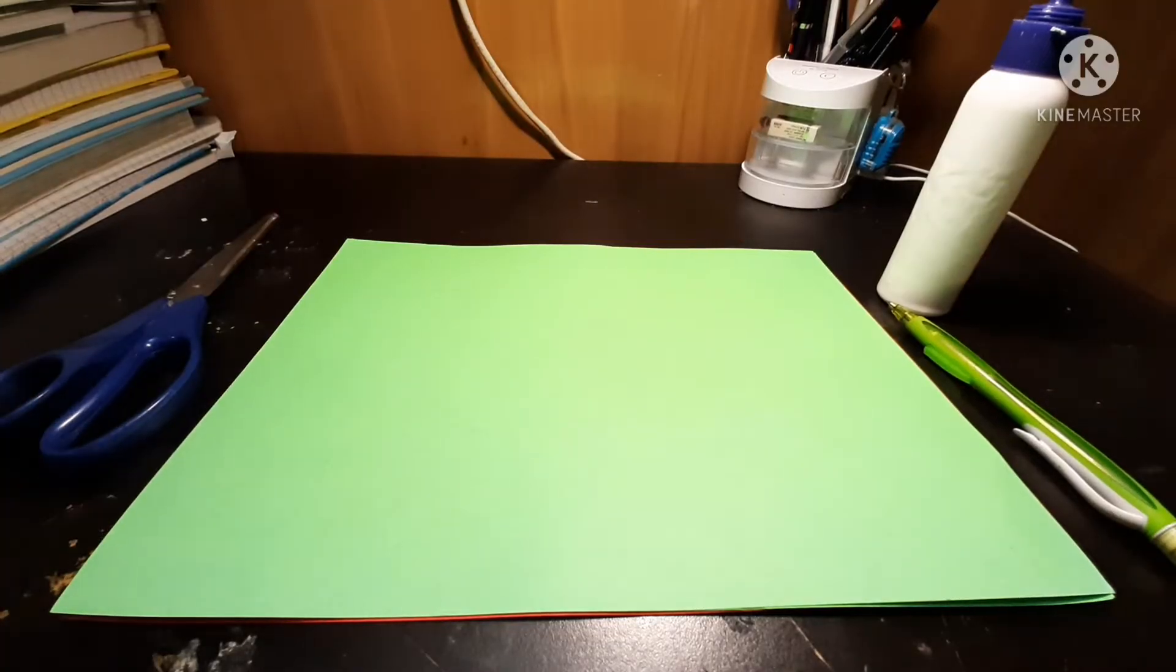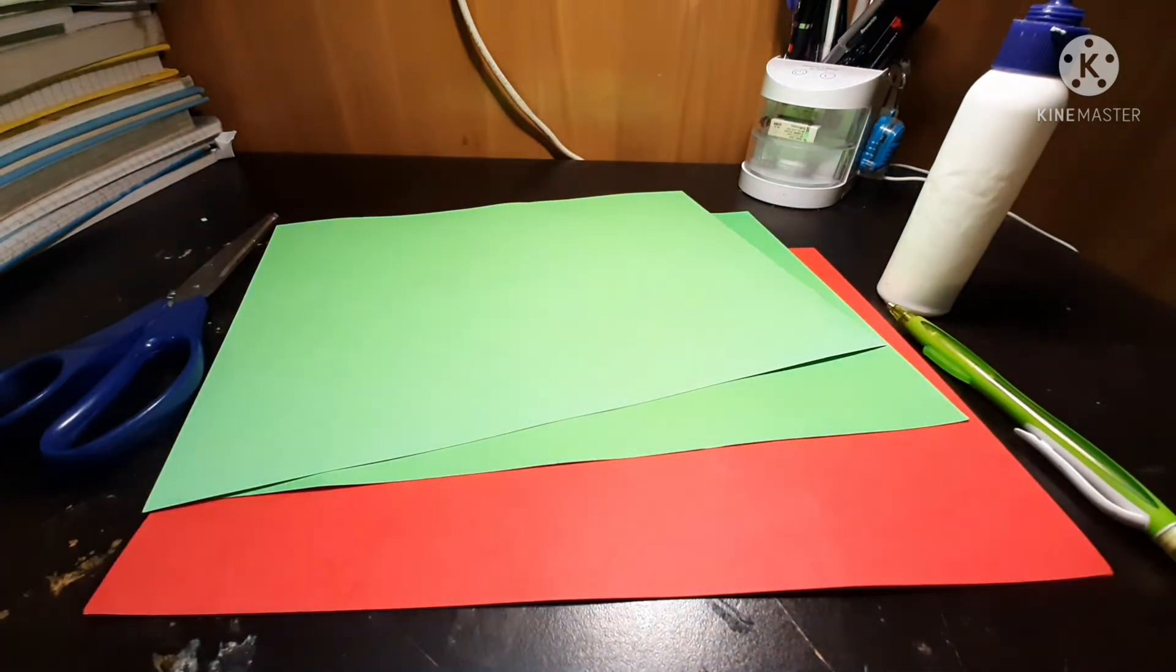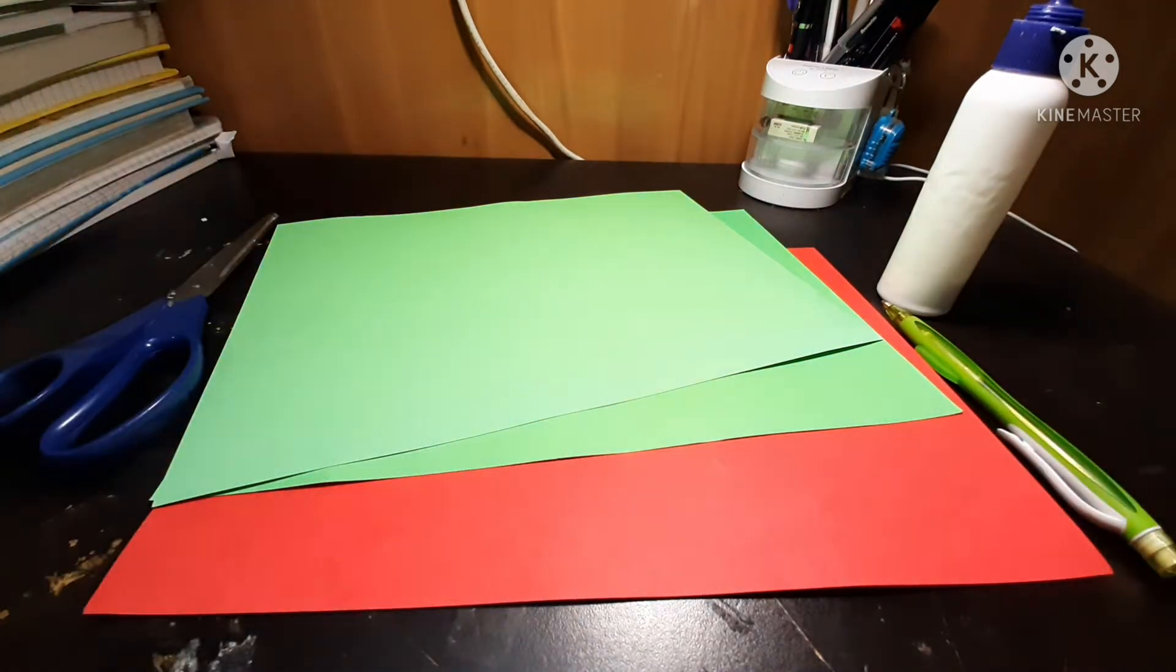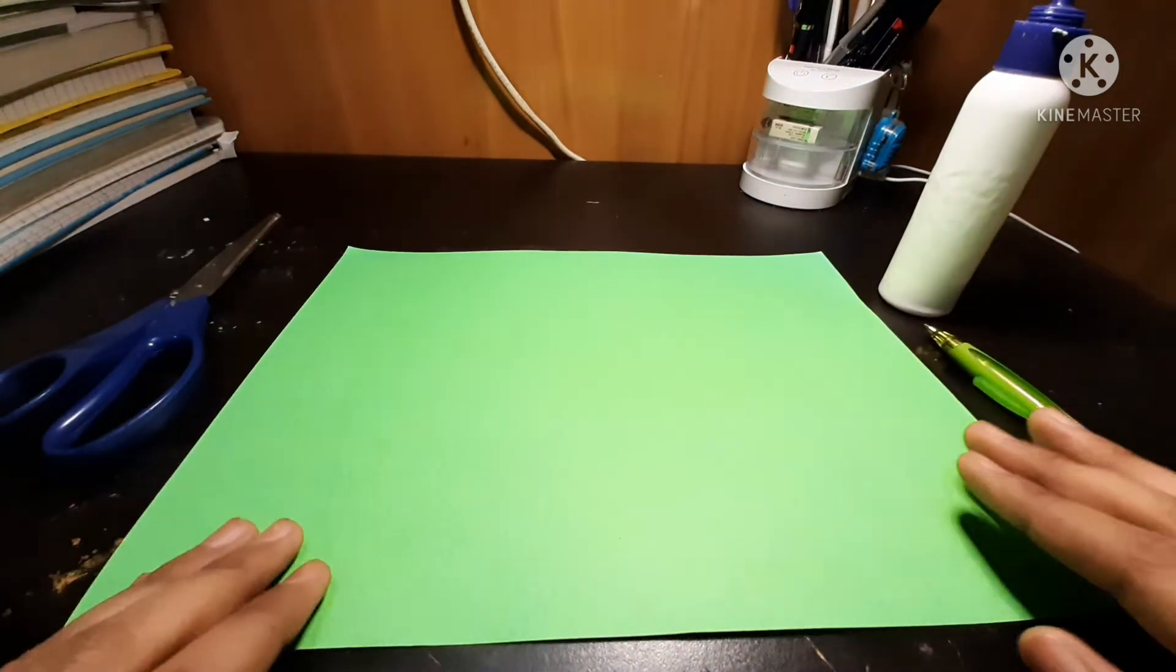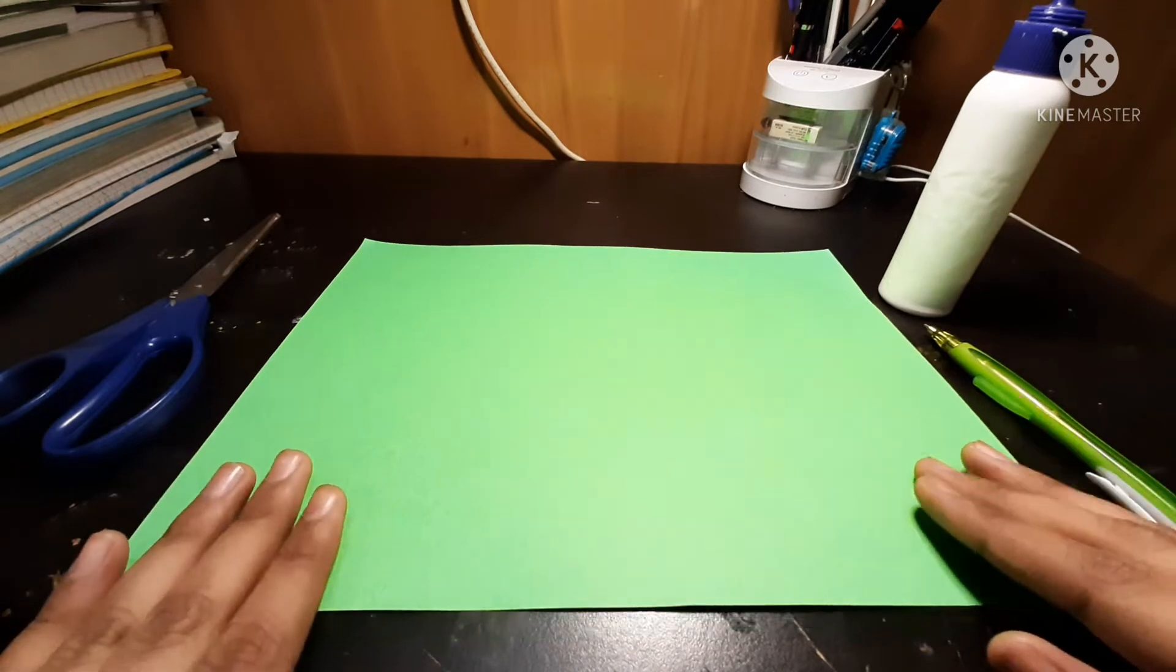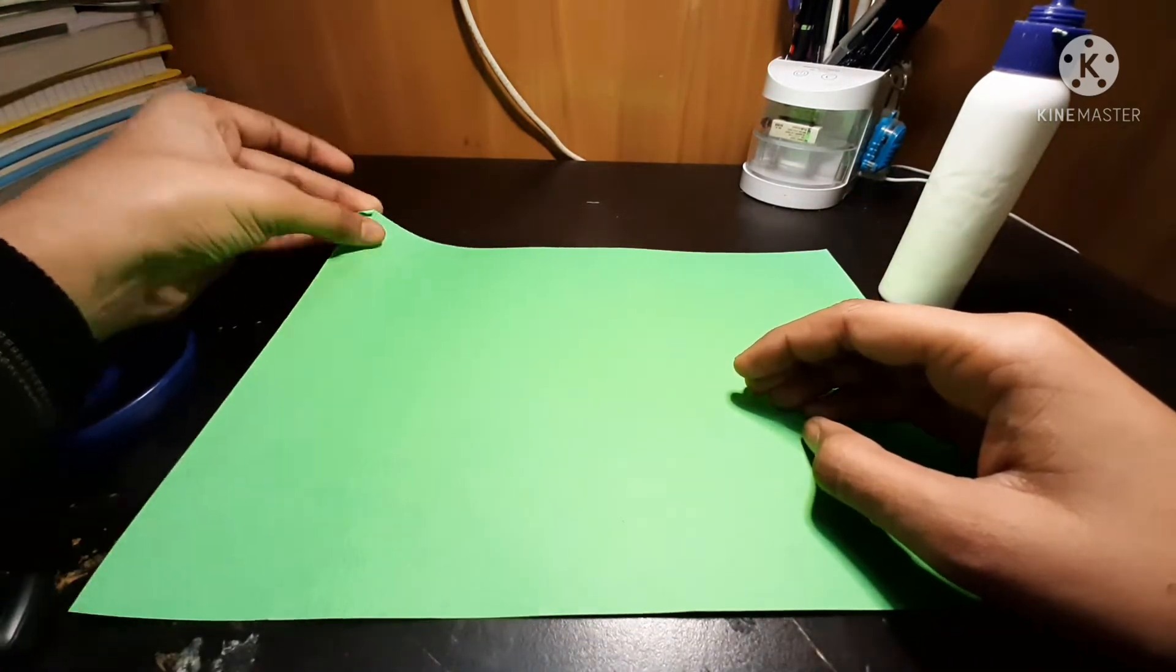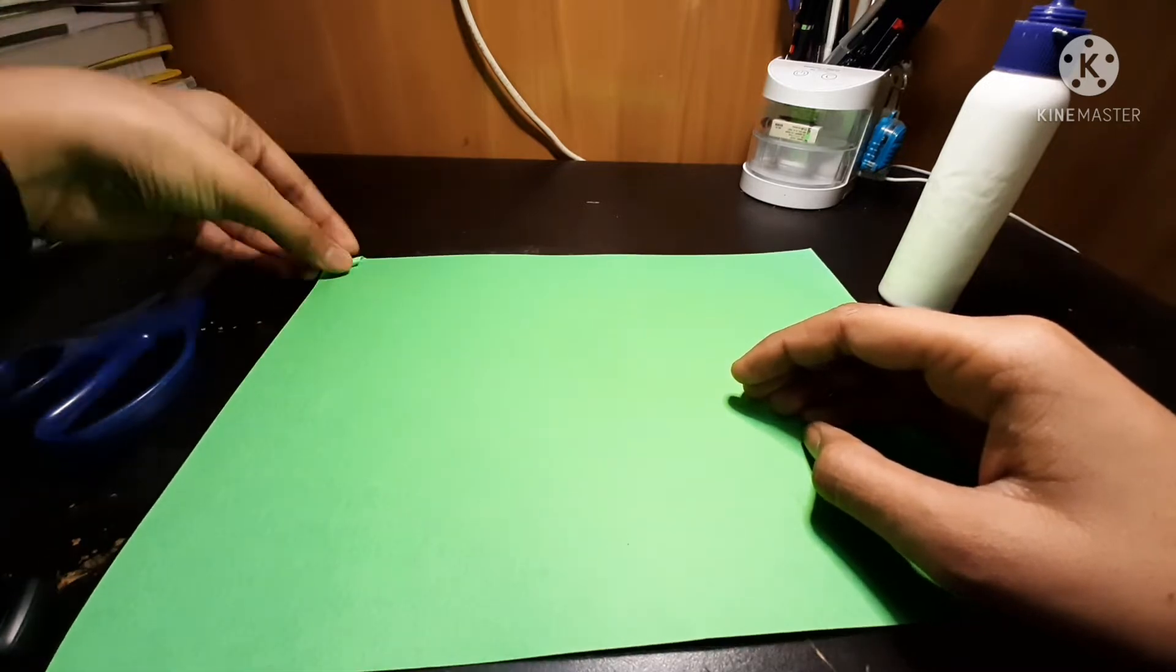So guys, now let's start making the flower. For making the flower we'll need red and green color A4 size sheets. We'll firstly take the sheets. I would like to take the green sheet for making the stem of the flower because the stem is of green color.